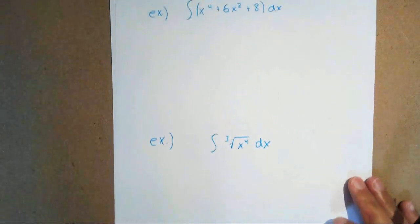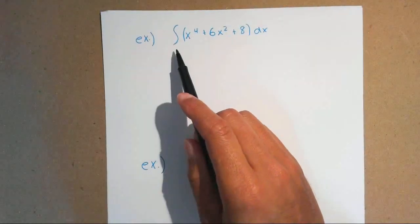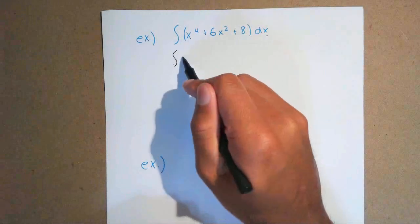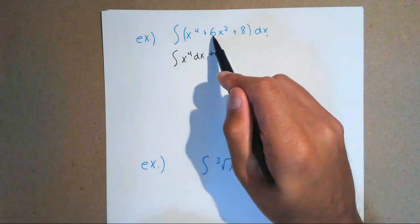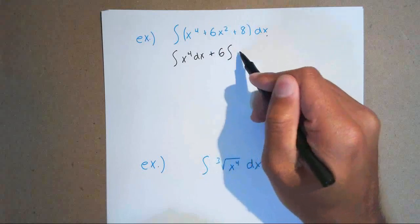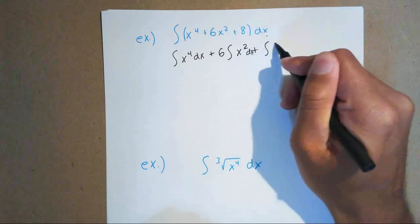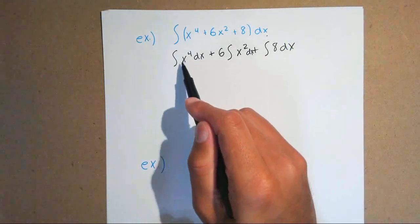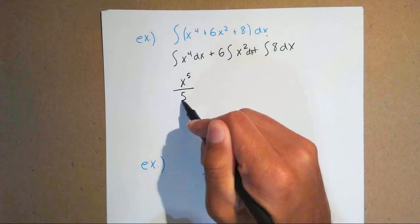Now we're going to take a look at a full example. We need to find the antiderivative of x to the 4th plus 6x squared plus 8, with respect to x. What I like to do is separate everything: the integral of x to the 4th dx, plus the integral of 6x squared dx, plus the integral of 8 dx. We find the antiderivative of every single term separately. For x to the 4th, add 1: x to the 5th, divide by 5.